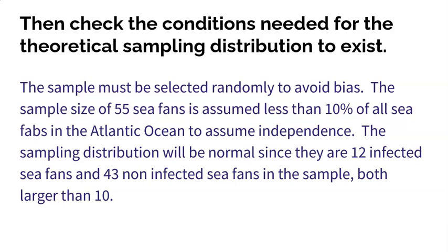The sample needs to be big enough so that the sampling distribution can be normal. Now, when you're working with proportions to be quote unquote big enough, you simply need 10 or more expected successes and 10 or more expected failures. So in my sample, it clearly said I had 12 successfully infected sea fans and then I could do 55 minus 12 to get the 43 that are failing to be infected. Both of those numbers must be greater than or equal to 10. Now, in some problems you're not given the number of, you're given the proportion of. So in that case, you just have to multiply the proportion that you have times the sample size.